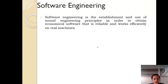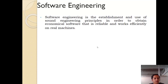Software engineering is defined as the establishment and use of sound engineering principles in order to obtain economical software that is reliable and works efficiently on real machines. When you make use of proper principles for the development of your software and get an end product which is reliable and can be installed on different machines, you can say that you have made use of software engineering. All the activities performed for implementing the project and getting the final product can be clubbed together under the term software engineering.